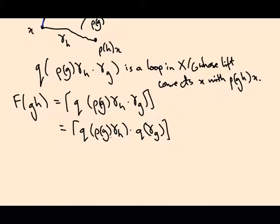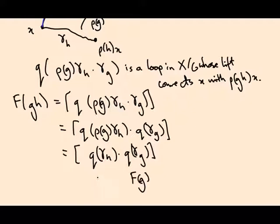Moreover, because this ρ(g) is the group action, and because this quotient is forgetting the group action, it's just identifying things that are in the same group orbit, this is the same as q(γ_h) dot q(γ_g). So this is exactly the path that you would use to get F of g, and this is exactly the path you would use to get F of h.